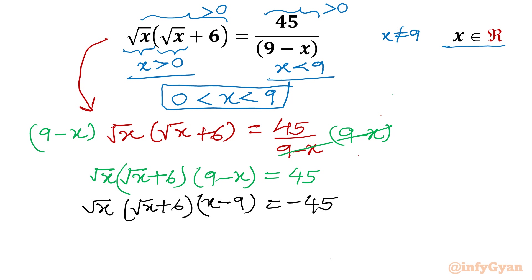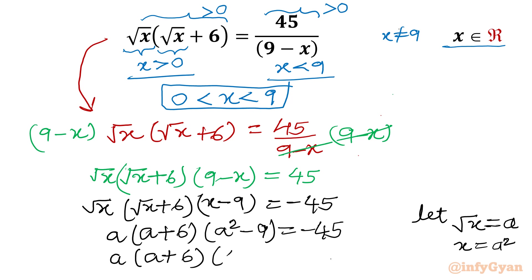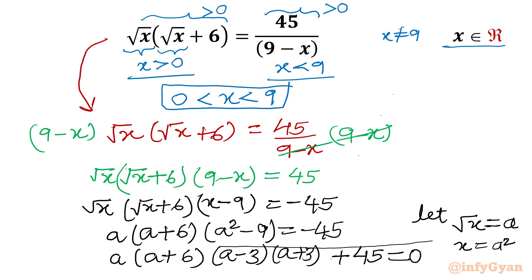Now let us consider a substitution. Let root x equal to a, which means x equals a squared. So the equation becomes a times a plus 6 times a squared minus 9 equal to negative 45. Applying the difference of two squares formula, a squared minus 9 factors as a minus 3 times a plus 3, giving a times a plus 6 times a minus 3 times a plus 3 equal to negative 45. This is a quartic equation.